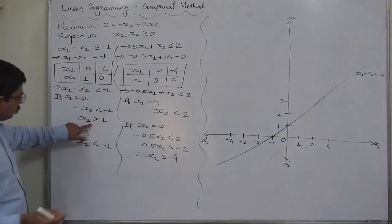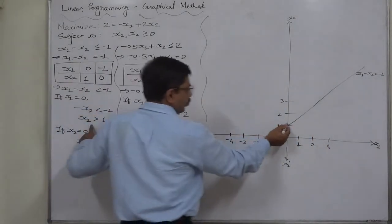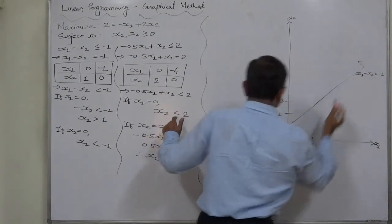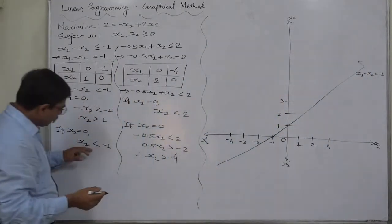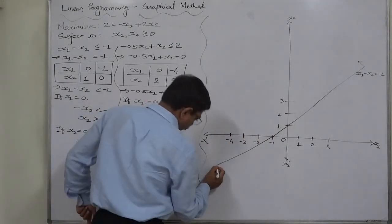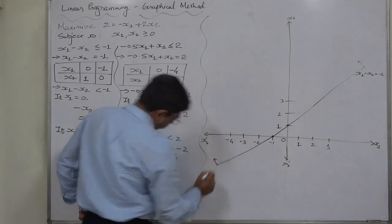What about inequality? x2 is greater than 1, x2 greater than 1, upper side. And x1 less than minus 1, less than minus 1, that is minus 2, minus 3, minus 4 and so on. So again, upper side of the line.